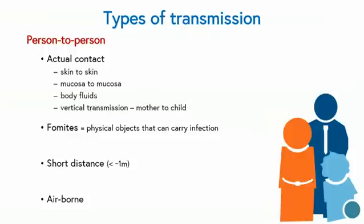There are several different types of transmission. Infections can transmit person to person. This can require actual contact — skin to skin, for example staphylococcal skin infections — or from mucosa to mucosa as occurs in sexually transmitted infections. Body fluids can be an important source of infection: blood, urine, sweat or other body fluids. And there's also vertical transmission, mother to child transmission, that's seen for example with HIV infection.